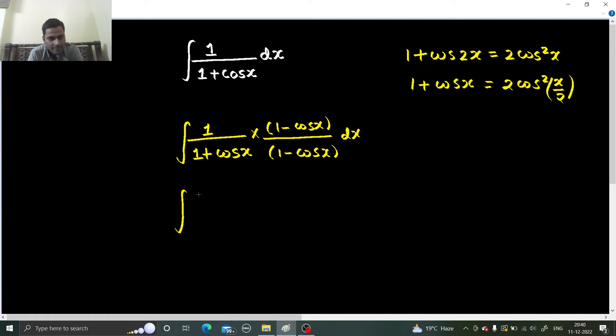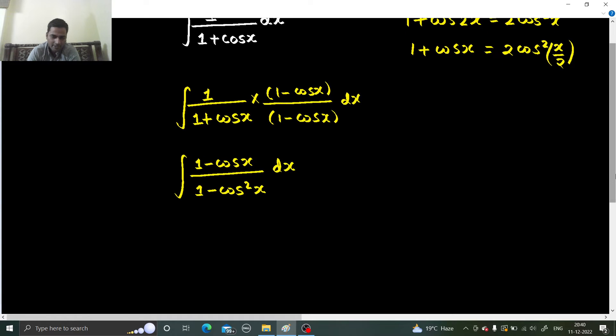Then this will become integral of 1 minus cos x over 1 minus cos square x dx. Look how simple it is becoming now, because you know sin square x plus cos square x equals to 1, so from there sin square x will be equal to 1 minus cos square x, fine.